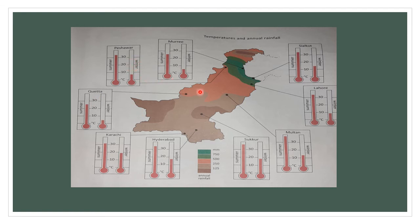Multan, Hyderabad, and Karachi received about 250 millimeters of rainfall annually, while only in Sukkur there is very less rainfall annually, which is about 125 millimeters. The key is helping us to understand and read the map clearly, and this map is showing the annual rainfall and annual temperature of all these cities in Pakistan.